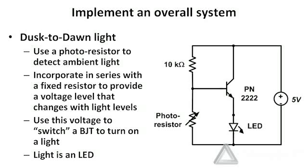The final part of this lab assignment is to implement an overall system: essentially a dusk-to-dawn light — a little light that we want to turn on when it gets dark outside. Our overall system is going to be run by a photoresistor, a device whose resistance changes with ambient light level. Looking at the circuit schematic, we have a 10 kilohm resistor in series with a photoresistor. Using KVL around the outer loop, the voltage between the 10 kilohm resistor and the photoresistor changes as the resistance of the photoresistor changes. We can use that change in voltage applied to the base of a BJT to turn it on or off. That BJT can then be used to provide power to our light, which consists of an LED — a light-emitting diode.